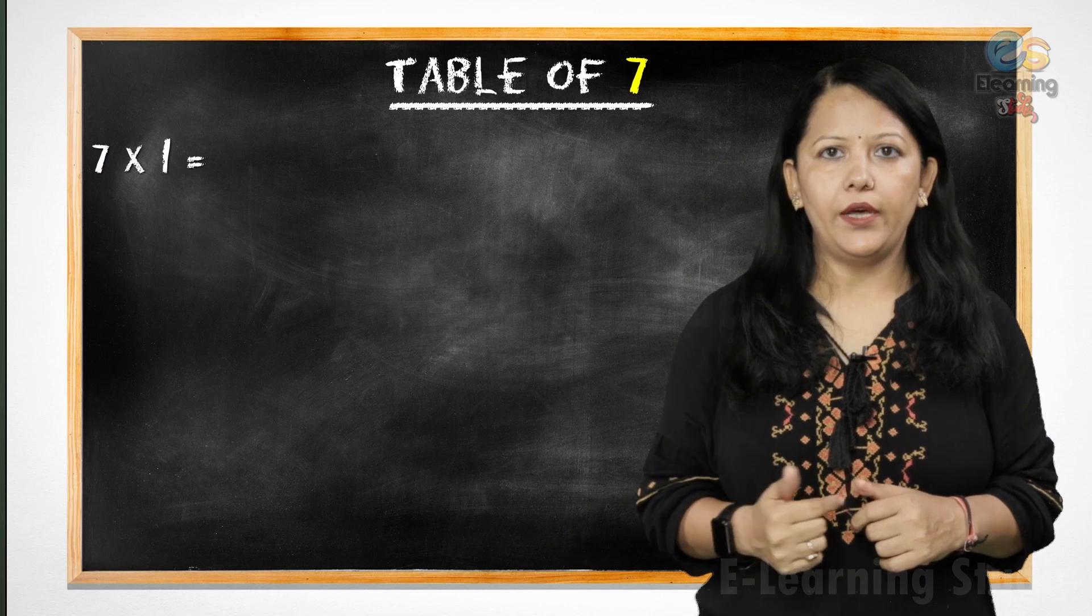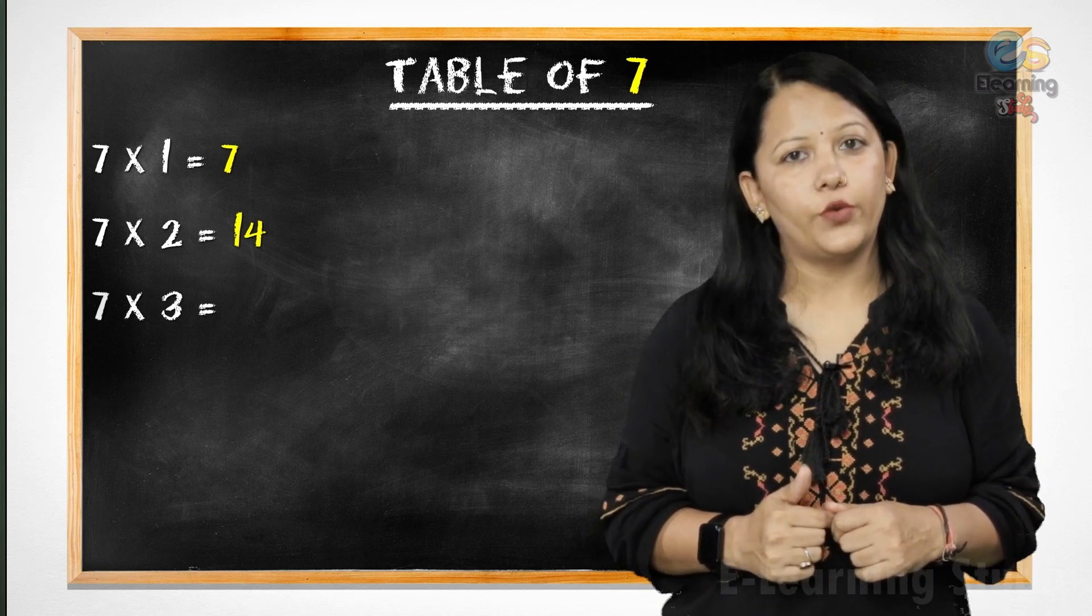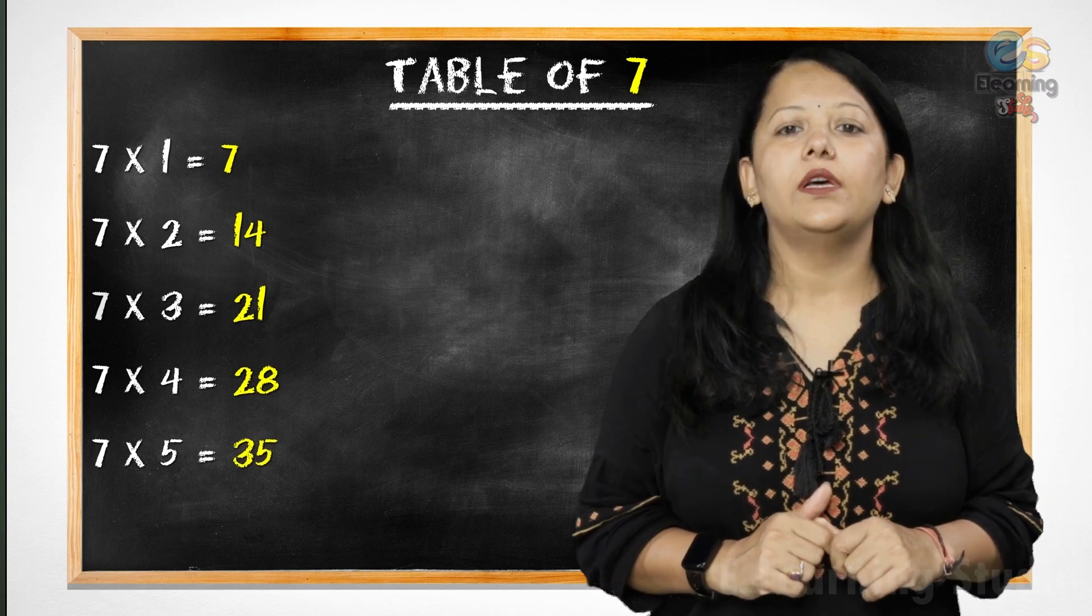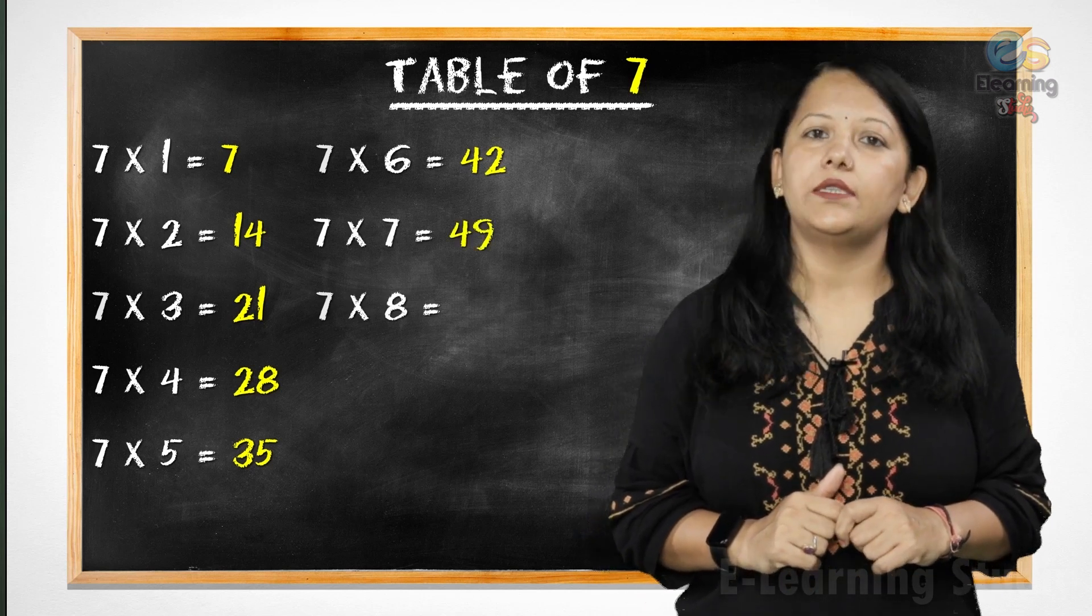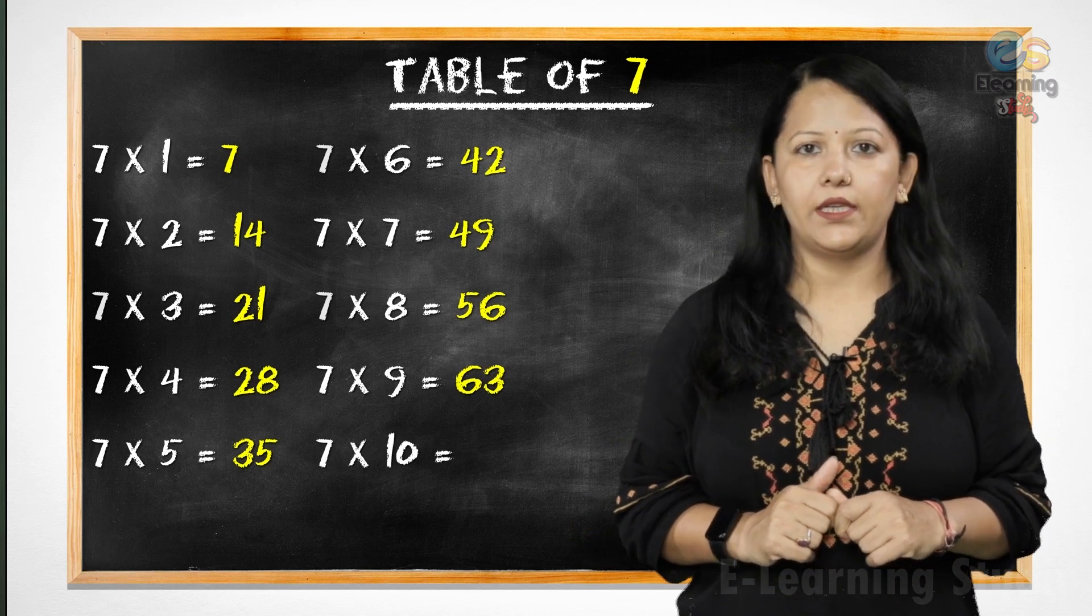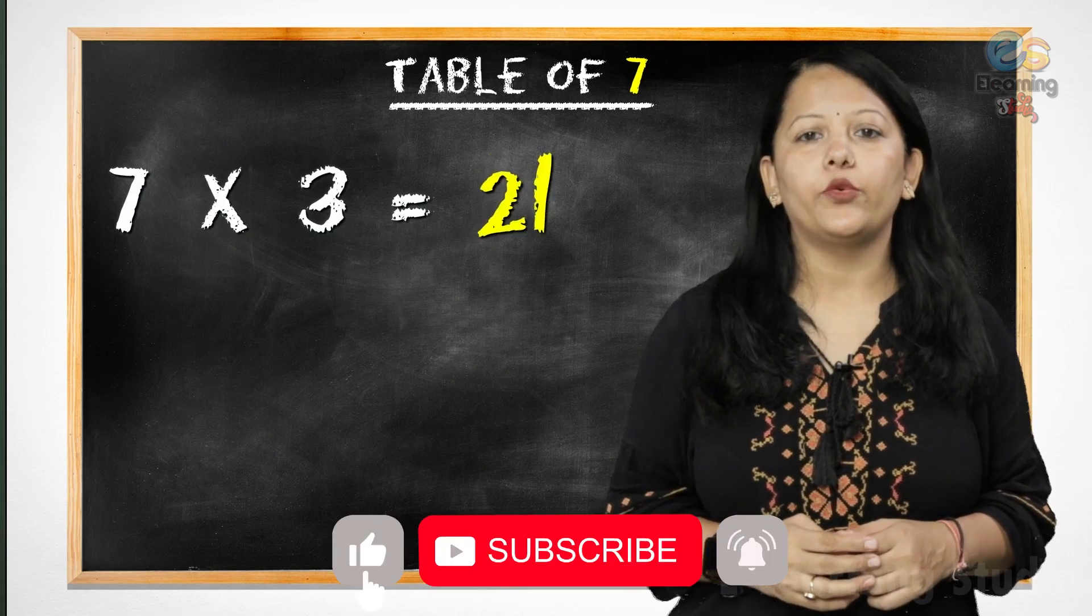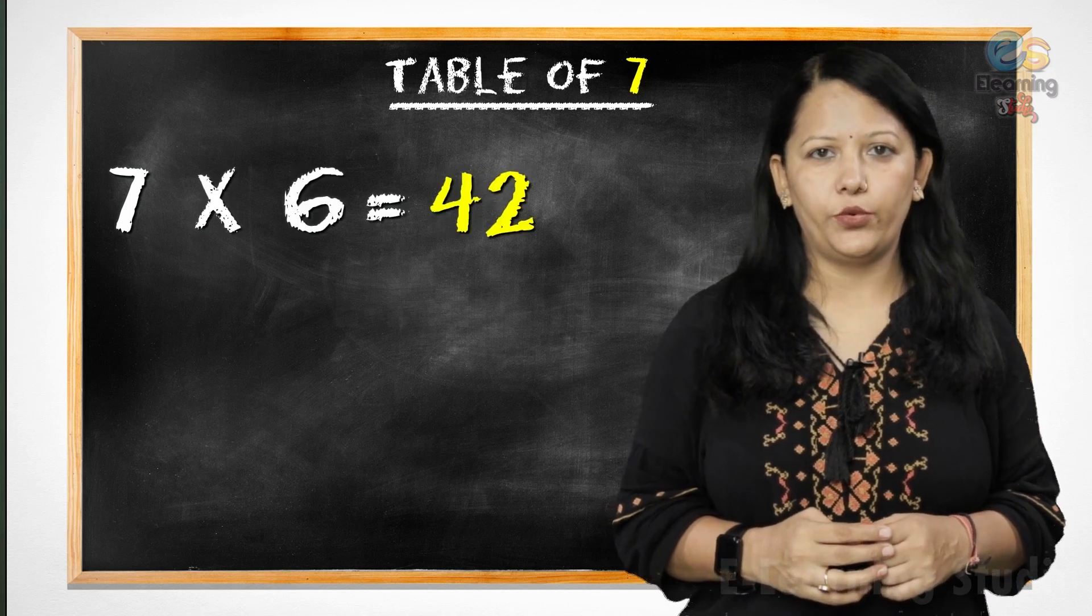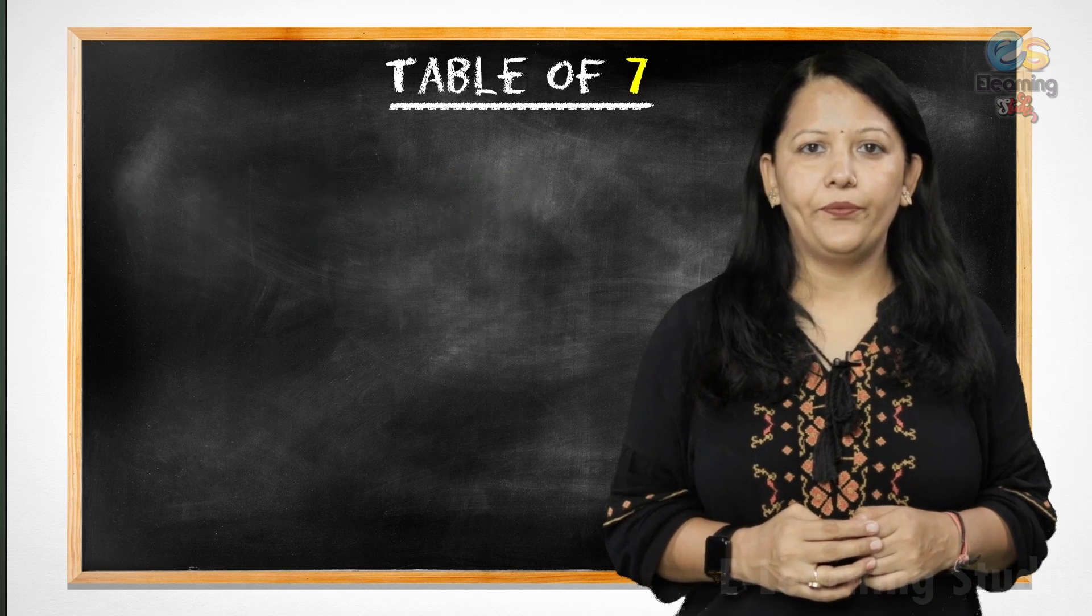Now, you will revise with me. 7 sixes are 42, 7 sevens are 49, 7 eights are 56, 7 nines are 63, 7 tens are 70.